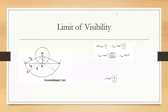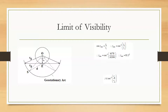We will start with the next topic: limit of visibility. Limit of visibility tells you how many satellites in an orbit a particular earth station will be able to communicate with. Suppose this is my earth station on the surface of the earth and this is a geostationary orbit. The limits of visibility of this earth station will be from a particular point in the west to a particular point in the east. Let us first derive the expression assuming the earth's antenna has zero degree elevation, aligned with the surface of the earth.